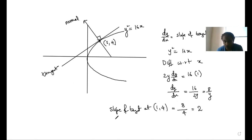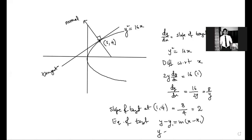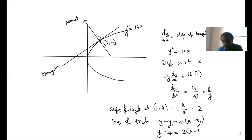So the equation of tangent will be in slope-point form: y minus y1 equals m times x minus x1. So y minus 4 equals 2 times x minus 1, which gives y minus 4 equals 2x minus 2. Rearranging: 2x minus y plus 2 equals 0. This is the equation of the tangent.